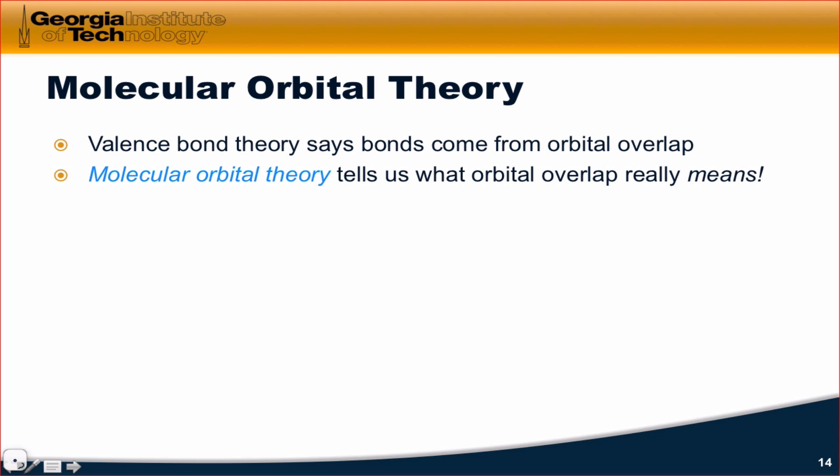We've already talked about the fact that orbital overlap is really just the addition of wave functions, and what molecular orbital theory allows us to do is add, subtract, and multiply wave functions over multiple atoms, atoms that are not necessarily adjacent to one another, in order to generate molecular orbitals.